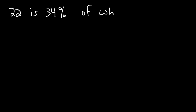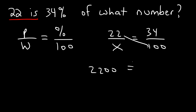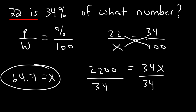Here's another example: 22 is 34% of what number? The part is 22 and the percentage is 34. We need to find the whole or base. 22 times 100 is 2200, and X times 34 is 34X. Dividing both sides by 34, we get 64.7. So 22 is 34% of 64.7. Now you know how to use the percent proportion formula to find the part, the percent, or the base — which is also known as the whole.